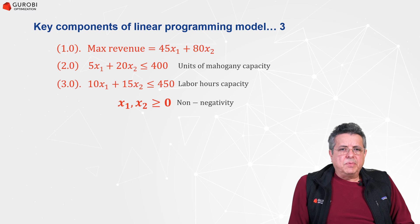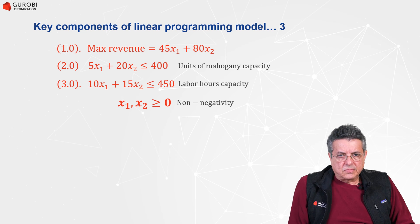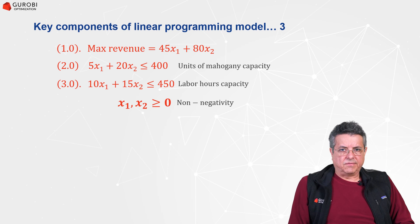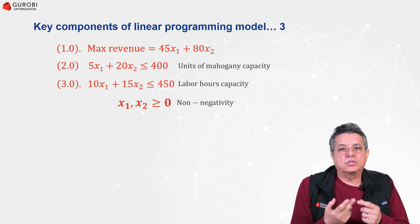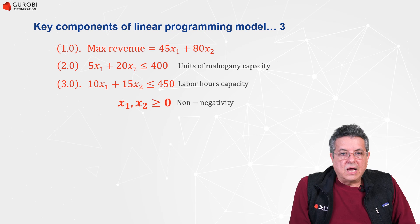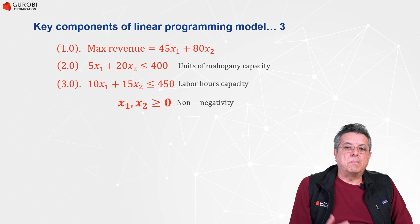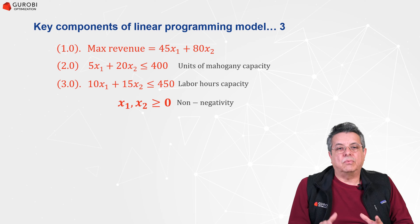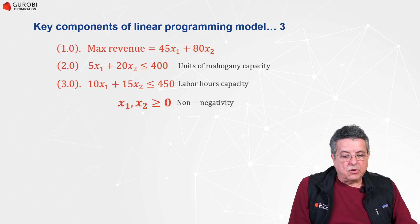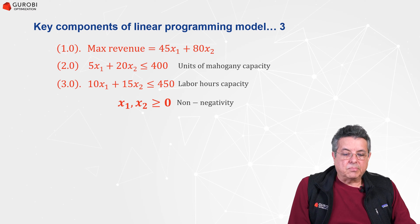This LP model has two types of constraints that limit the number of chairs and tables that can be produced. These constraints are defined over the set of resources — the Mahogany resource and the labor resource — and represent the consumption of each resource by the production plan. We impose that this consumption cannot exceed the amount of available resources. Finally, we have an objective function, which is to maximize total revenue generated by the production plan defined by X1 and X2.